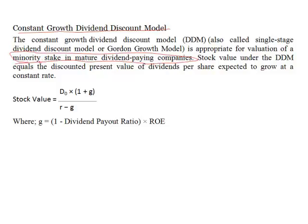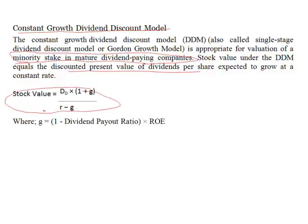The constant growth dividend model, also known as the single-stage dividend growth model or Gordon Growth Model, is appropriate for valuation of a minority stake in a mature dividend-paying stock. The stock value under this model equals the discounted present value of the dividend per share expected to grow at a constant rate: D₀(1+g) divided by (r - g), where r is the required rate of return or cost of capital, and g is the growth rate, calculated as (1 - dividend payout ratio) multiplied by return on equity.